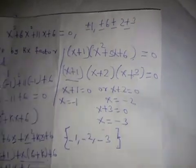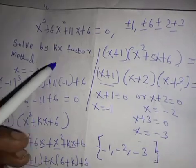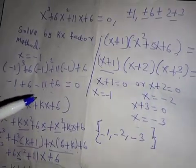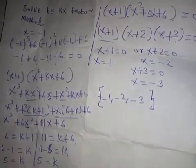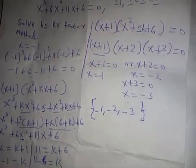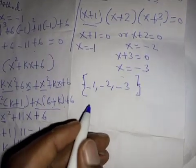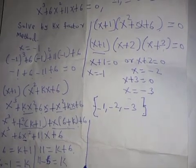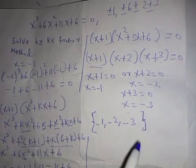The solution set is: negative one, negative two, negative three. That is how we solve a cubic equation using the kx factor method. You can check my channel for other methods to solve the same equation. At this stage, you can verify your working — for x equals negative one, we already confirmed it is correct.